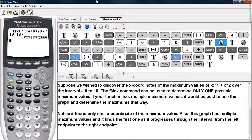Notice it found only one x-coordinate of a maximum value. This particular graph has multiple maximum values, and it finds the first one as it progresses through the interval from the left endpoint to the right endpoint.